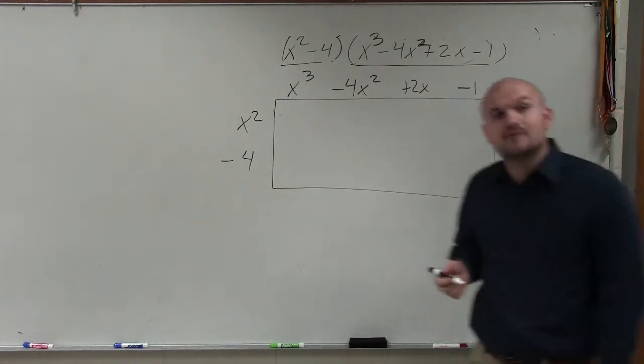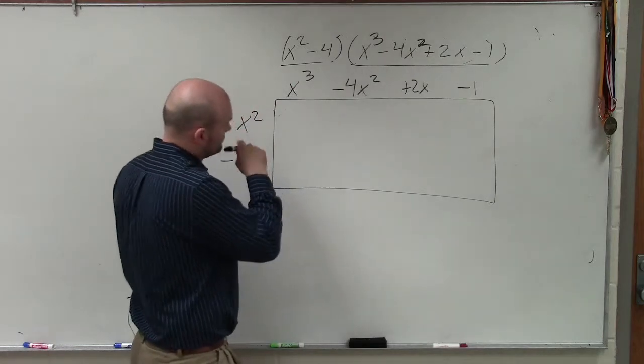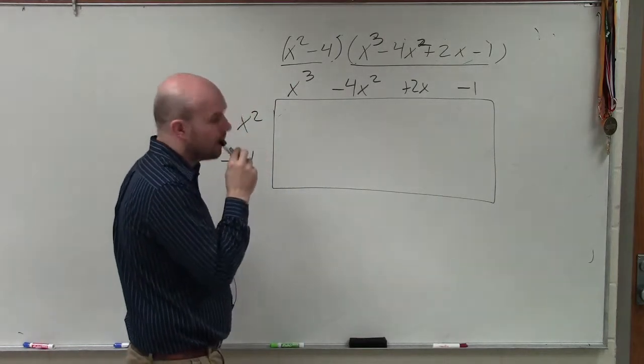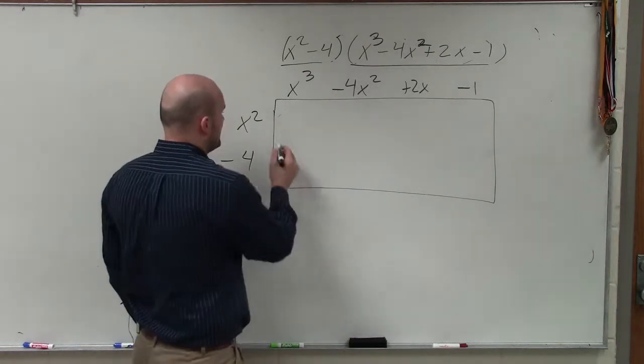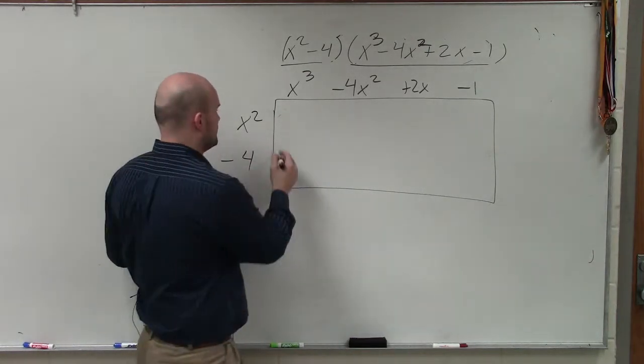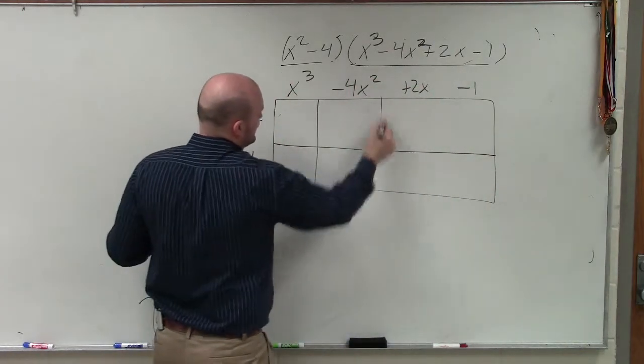So now, to help us out, yes, Brianna? Can't you just multiply the x squared by all those, and then the negative 4, and then add? And that's exactly what we're going to do. So let me show you. So to help this, rather than trying to multiply to get this whole area, what I'm going to do is I'm going to break up the rectangle into smaller rectangles.